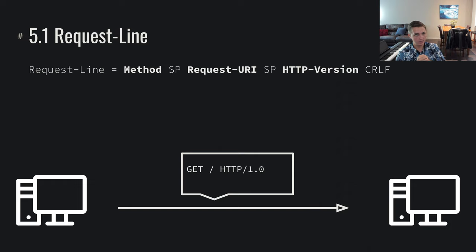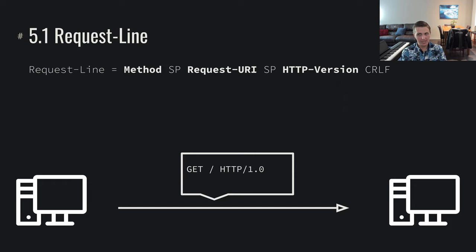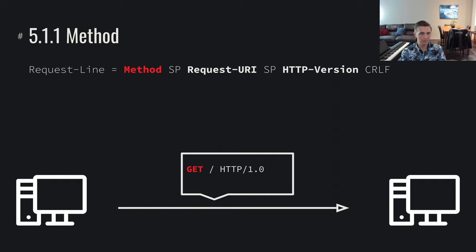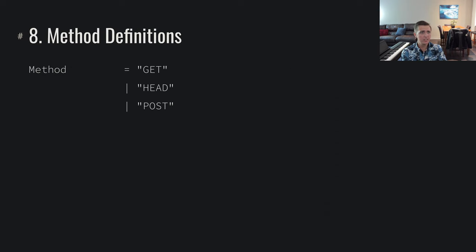The structure, as the RFC defines in section 5.1, is the request line. A request line is made up of a method, followed by a space, followed by a request URI, followed by a space, followed by an HTTP version, followed by a carriage return line feed. The GET is our method — this is the action we're taking against the web server. The method options defined in RFC 1945 are GET, HEAD, and POST, and these are what we're specifically going to be looking at in this lecture.